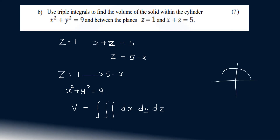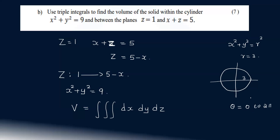For the region x² + y² = 9, the radius is 3. We use a polar coordinate system. This circular region gives us theta ranging from 0 to 2π and r ranging from 0 to 3.